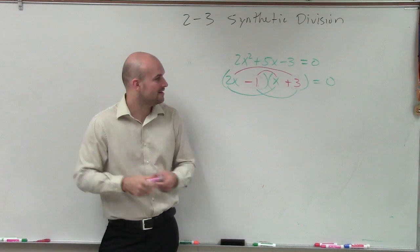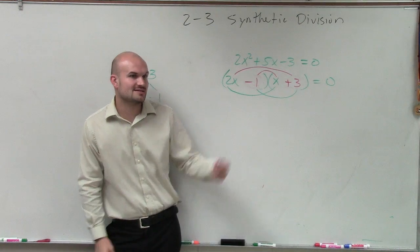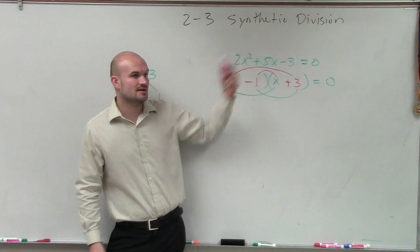Now that works, right? Because negative 1 times x is negative x. 2x times 3x is 6x, 6x minus x is 5x. Now that works out.